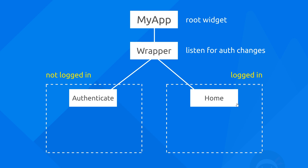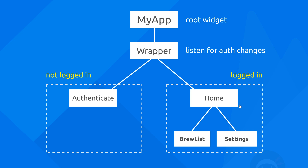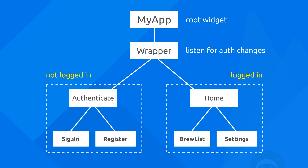The wrapper is dynamically showing different content dependent on the authentication status of the user. Inside the home screen we're going to list all of the data and hot drink preferences of each user in the app inside a brew list widget nested inside the home screen widget. Also inside the home screen there's going to be a settings panel widget where the user can update their own coffee preferences — how many sugars they want, what strength, etc. On the other side, when a user is not logged in, we're going to show the authenticate widget with either a sign-in widget or a register widget nested inside.